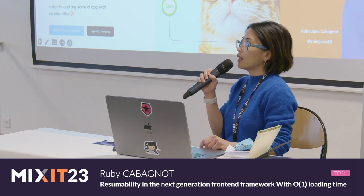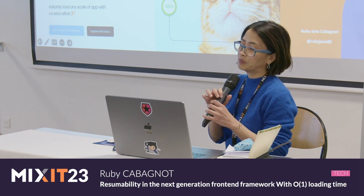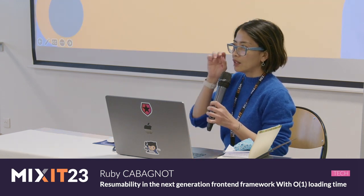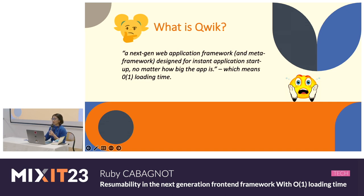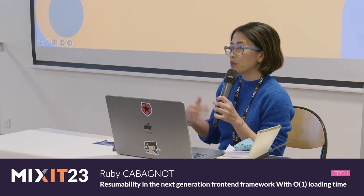Qwik has something to do with this thing called resumability. So, what is Qwik? In a nutshell, it is a new kind of JavaScript — or next-gen — web application framework that makes it possible for web apps of any size or complexity to load instantly and run the same way at any scale. Before we can appreciate Qwik, we need to know what problem the creators are trying to solve.